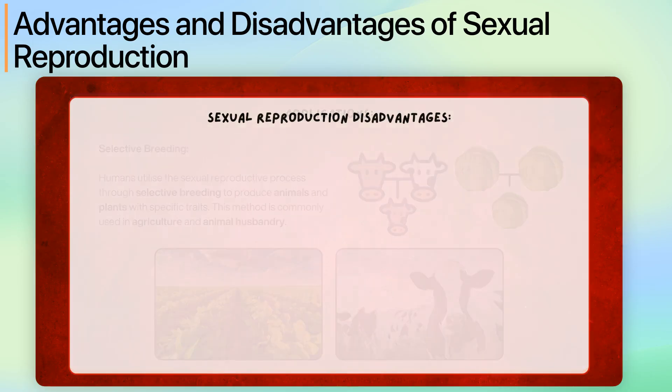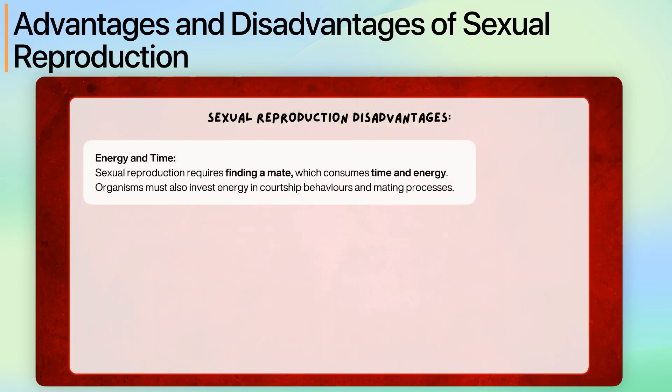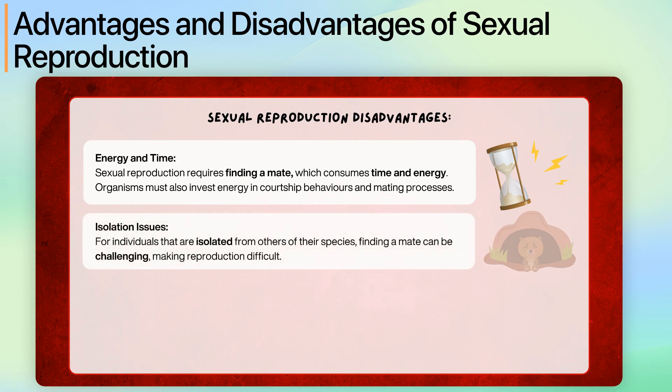Disadvantages include the energy and time required. Sexual reproduction requires finding a mate, which consumes time and energy. Organisms must also invest energy in courtship behaviours and mating processes. For individuals that are isolated from others of their species, finding a mate can be challenging, making reproduction difficult.